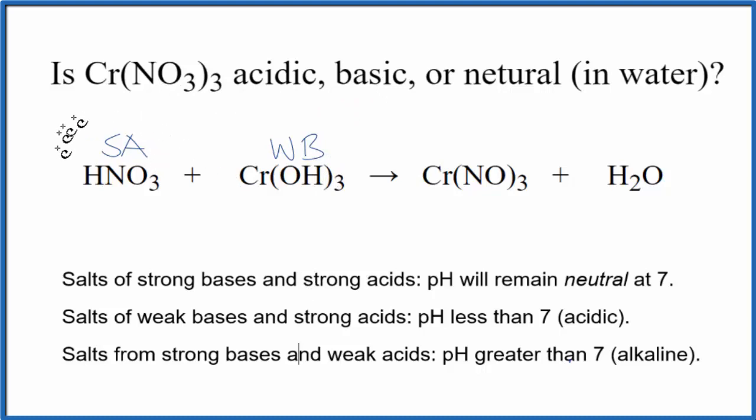Looking at the rules, we're trying to find a strong acid and a weak base. Here's a strong acid and a weak base. And when we have these react to form the salt and water, we expect the pH to be less than seven. So it'll be acidic.